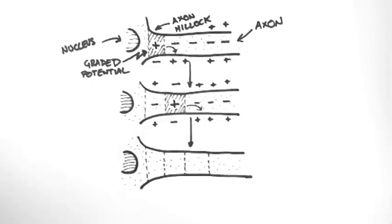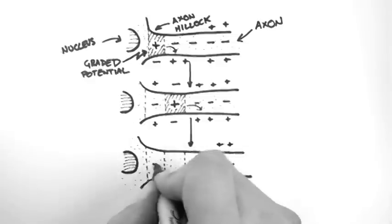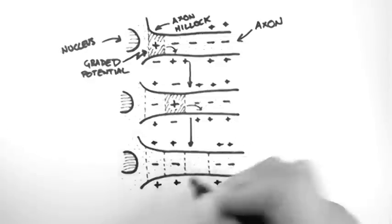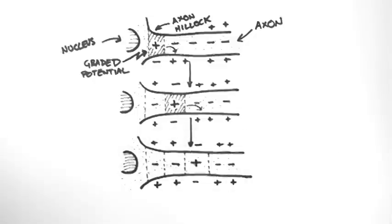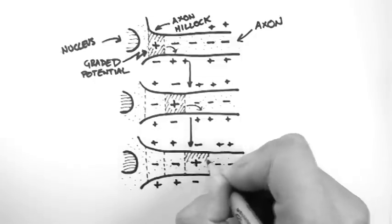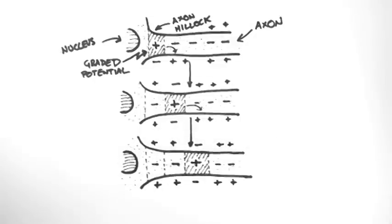Now I'm sure you can guess what happens here. There is an action potential triggered in the next segment of this axon, and meanwhile the previous segments have returned to their resting membrane potential. The local current flow then moves into the next segment of the axon and triggers an action potential in that segment. And this process continues until the action potential has propagated all the way down the axon.